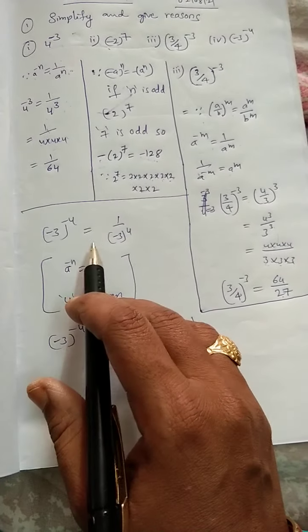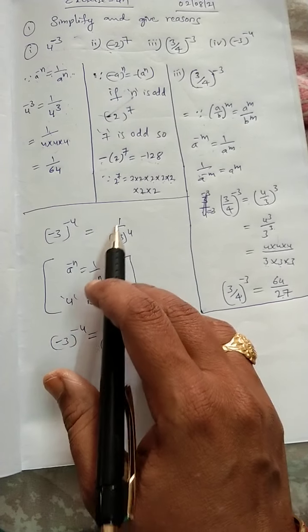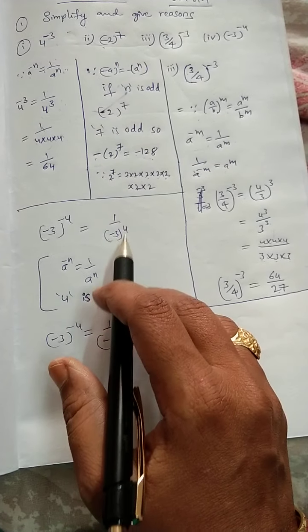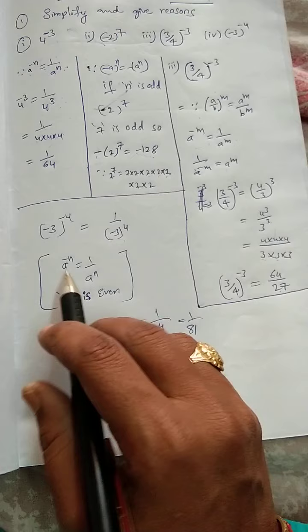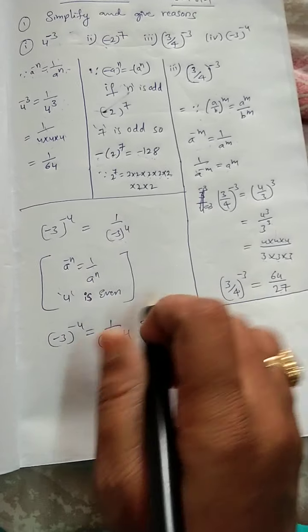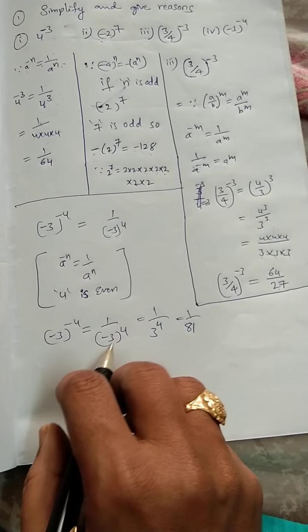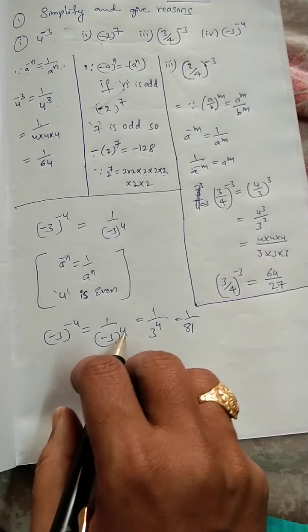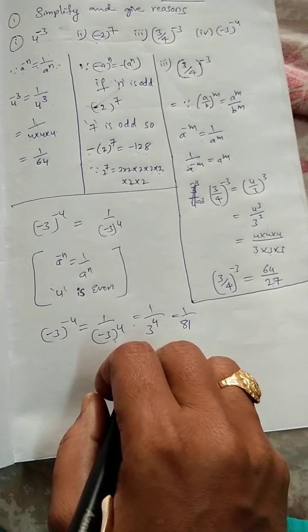Minus 3 whole power minus 4 is equals to, we can write as 1 by minus 3 whole power 4. This form. Now, 1 by minus 3 whole power 4, it will become 1 by 3 power 4.